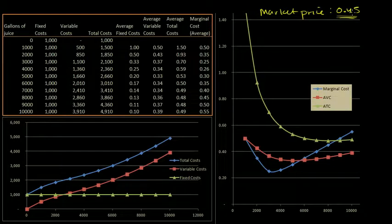Every incremental unit, you're going to get 45 cents. So you want to look at the quantity where your marginal revenue, the 45 cents, is equal to your marginal cost.